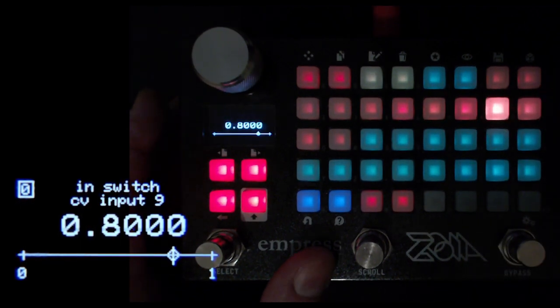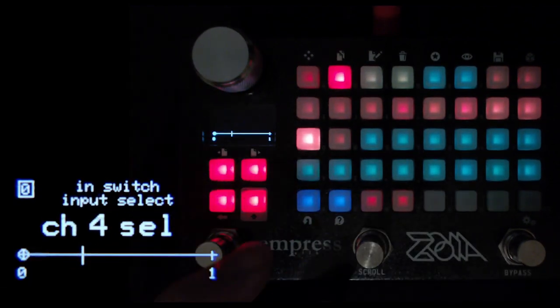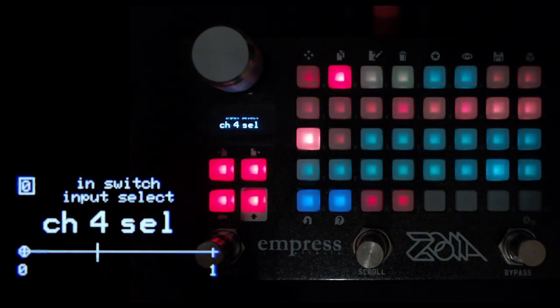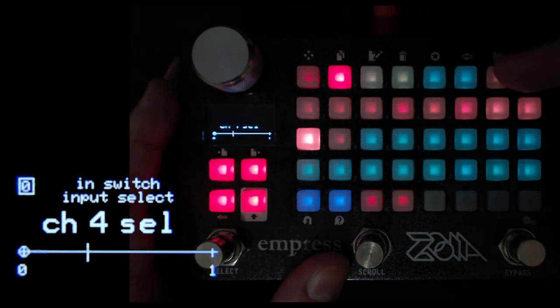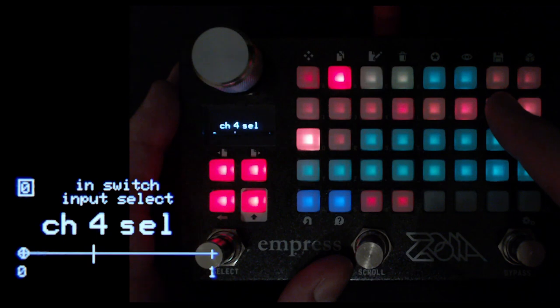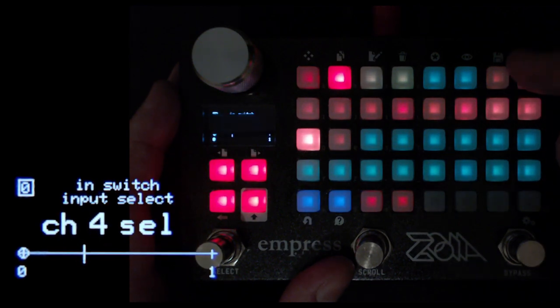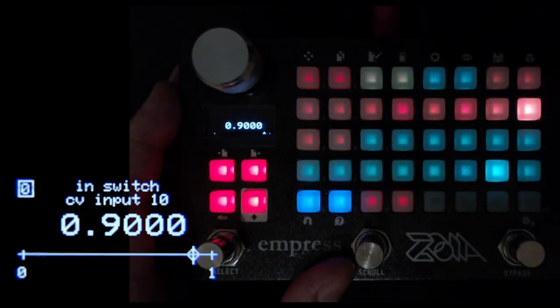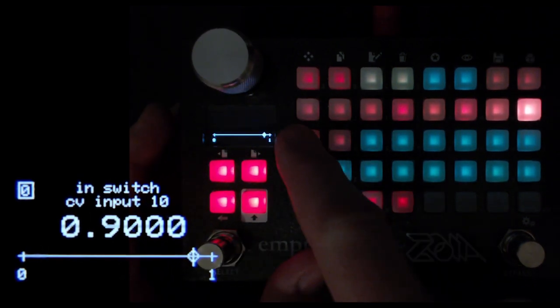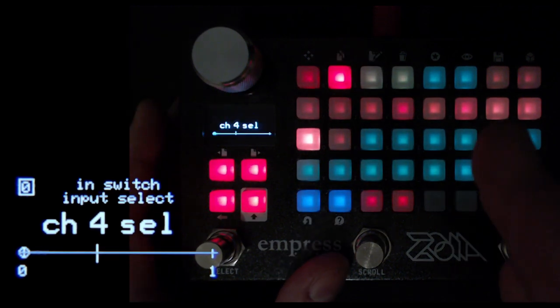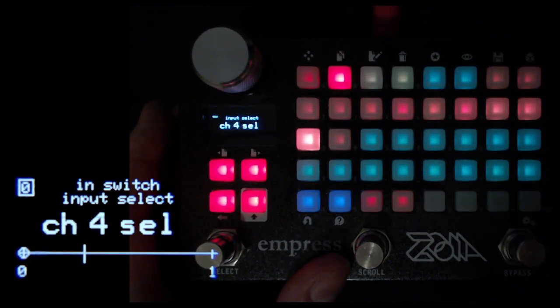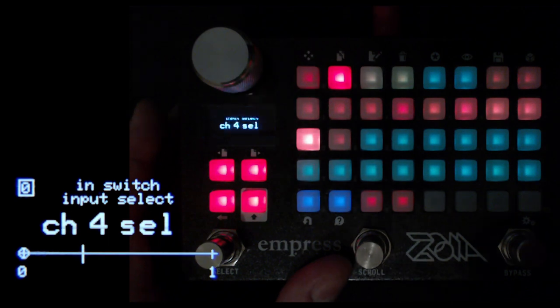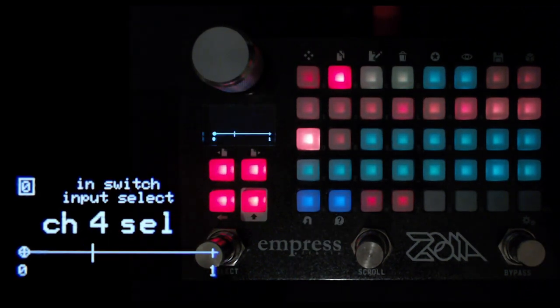How it decides which value is sent out is based on the channel selector. The channel selector on the switch takes the CV range from 0 to 1 and divides it equally between the number of channels on the switch. In this case, there are 10 channels. The first channel is selected when the channel selector gets a CV value between 0 and 0.1. Once it gets to 0.1 exactly, it goes up to channel 2. Then 0.1 to 0.2, 0.2 to 3, etc. It's quite simple once you have 10 channels.